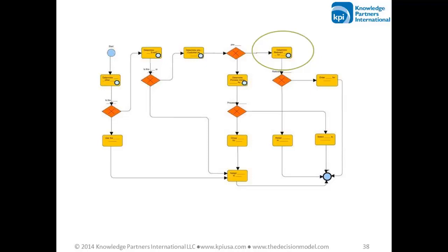At this point, you want to go back to the process model you started with. If you recreate that process model showing decision models in it, you can simplify the process model and show exactly which task has the decision model in it. You'll notice that all of the business rule pointers in the original process model are gone. Any change in business rules typically doesn't need a change in the process model — they need a rule change in the decision model. You go into the decision model, look at the rule families, make the change, validate against principles, generate test cases and test. That can be done separate from IT doing the automation.